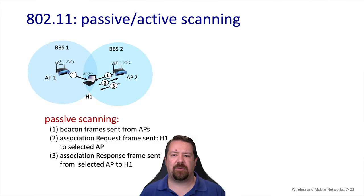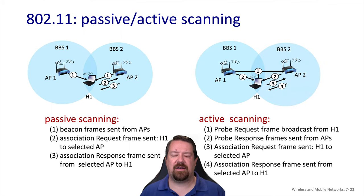Let's look at the channel scanning process in more detail. This begins with the new host going into listening mode and rotating through the channels. Once it sees beacon frames from a network it recognizes, it sends an association request and receives an association response. This can take time because while the host is listening on one channel for beacon frames, it may miss beacon frames sent by nearby access points on other channels. An alternative is active scanning: the host sends out a probe request, and any access point on that channel sends a probe response containing the same information as a beacon. All modern operating systems use active scanning to speed up wireless association.